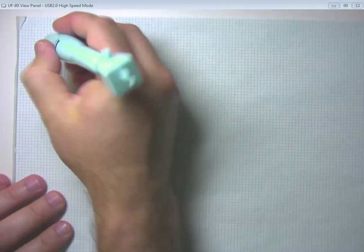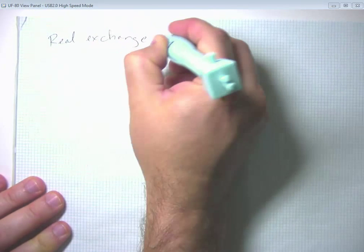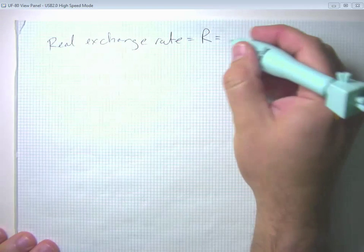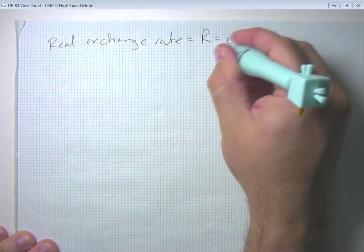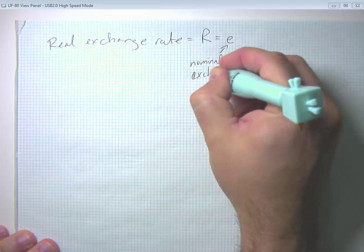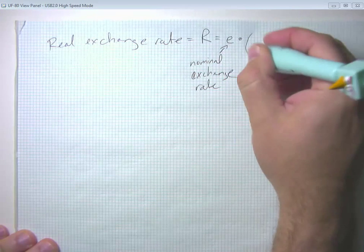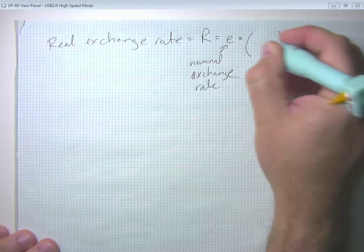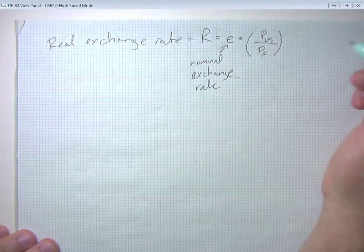So we're going to bring in a more formal definition of the real exchange rate. And the real exchange rate, which we're going to call big R, is the nominal exchange rate, so how many pesos per dollar, how many yen per dollar, times the ratio of the price levels in the two countries. So the price level in the US over the price level in the foreign country.